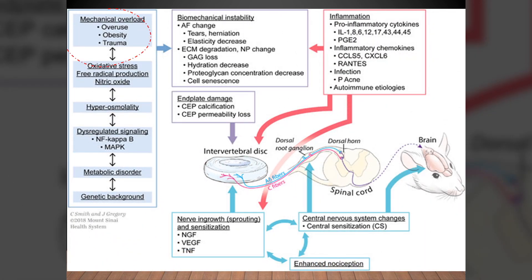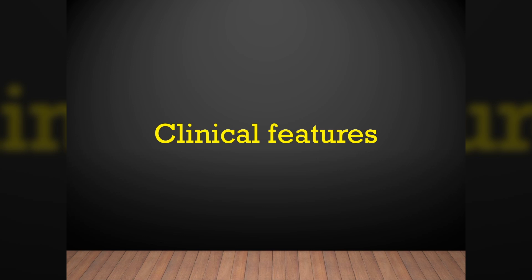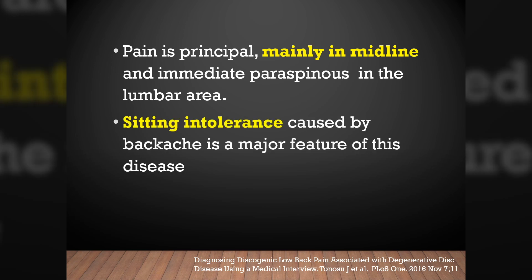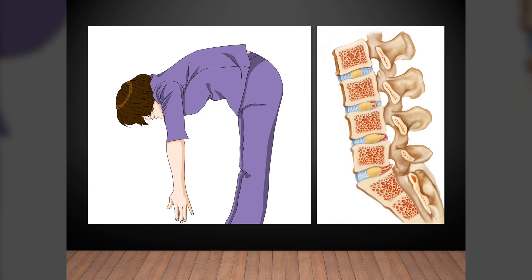In summary, mechanical overload due to overuse or trauma leads to biomechanical instability. The damaged disc becomes painful if inflammation and nociceptive painful nerve growth follow. Let's talk about the clinical features of discogenic pain. Pain is principally in the middle and immediate paraspinal region of the lumbar area. Sitting intolerance caused by backache is a significant feature of this disease. This behavior increases intradiscal pressure and worsens annular tears, provoking pain in a painful disc condition.